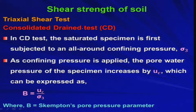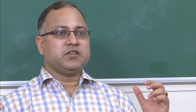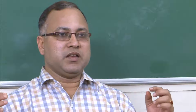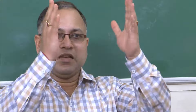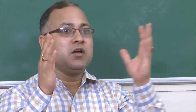First we will discuss what is the Consolidated Drained test, that is the CD test. In the CD test, the saturated specimen is first subjected to an all-round confining pressure sigma_3, which is the minor principal stress. Once you apply the all-round confining pressure, sigma_3 becomes the minor principal stress because along the specimen side you do not have any shear stress applied through the cell pressure.